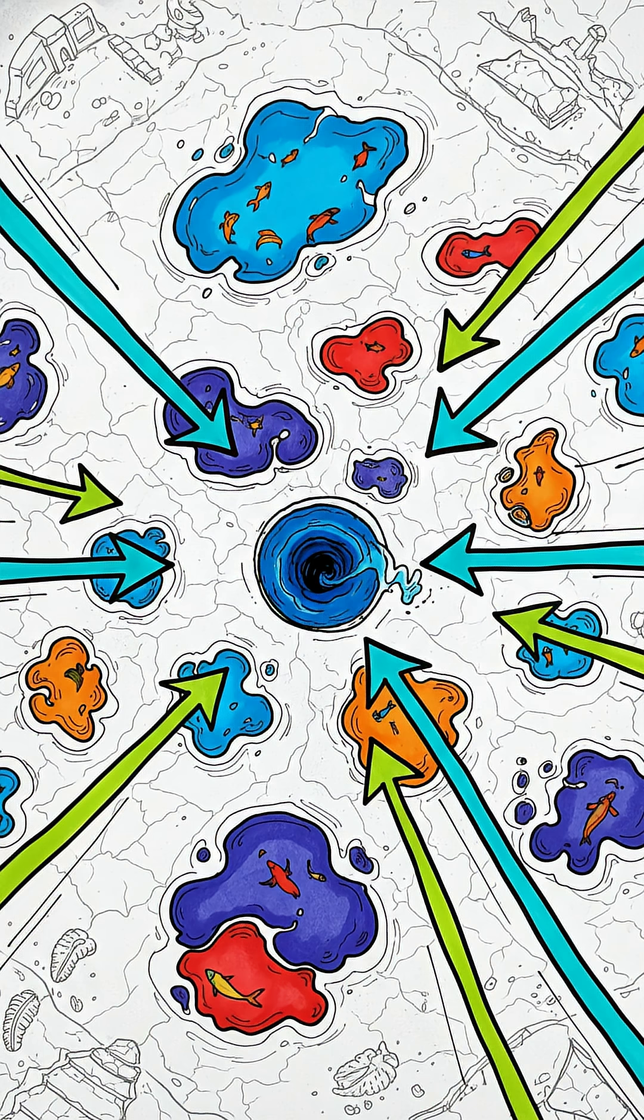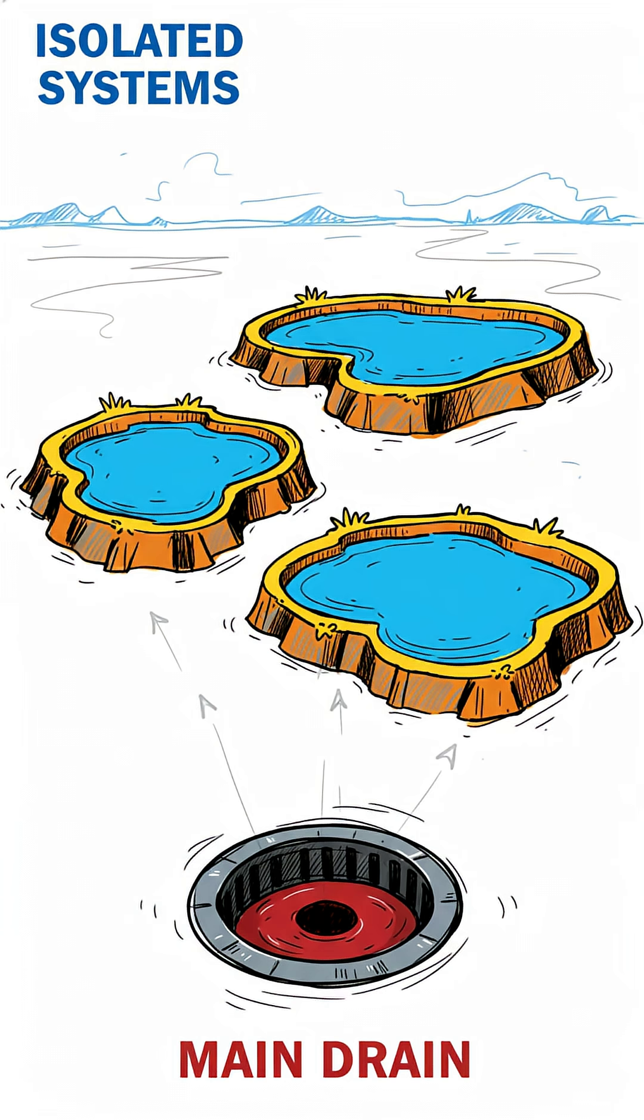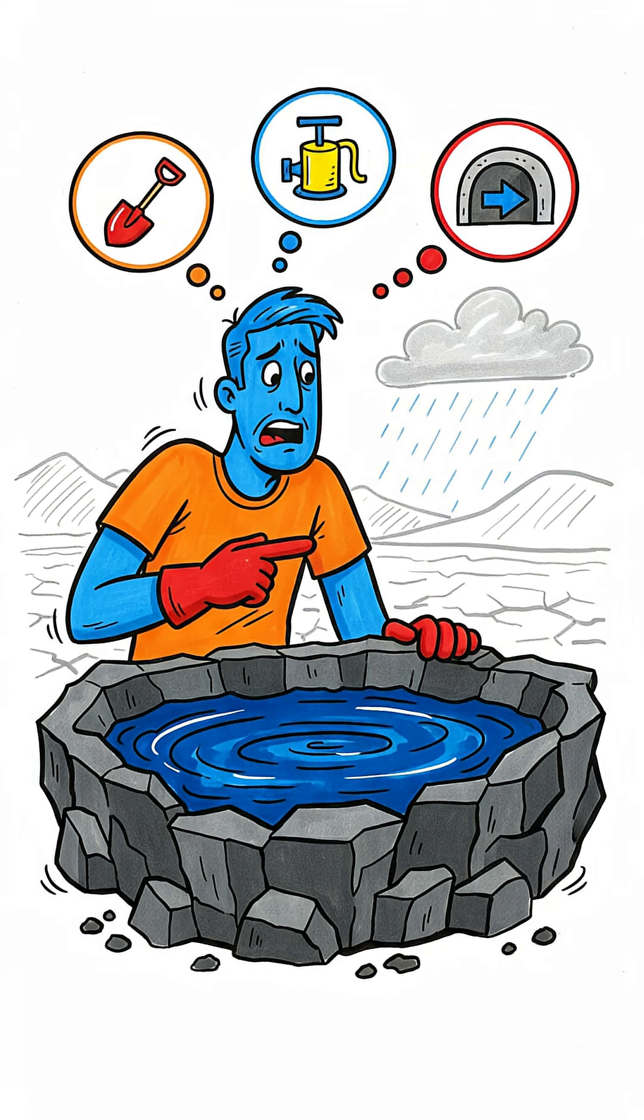First off, using just one drain would immediately create countless landlocked seas. Think about it. The ocean floor has all these underwater mountains and deep valleys. So huge amounts of water would just get trapped, completely cut off from the main drain, forcing you to find other ways to get it out.